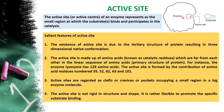For example, this is an enzyme. This portion, the pocket or the groove, is where your substrate will come and bind. That site is called active site. Active site is defined as the small region at which the substrate binds and participates in the catalysis.